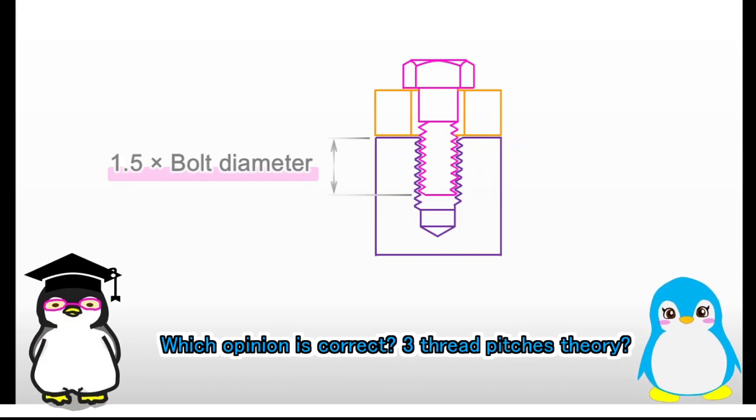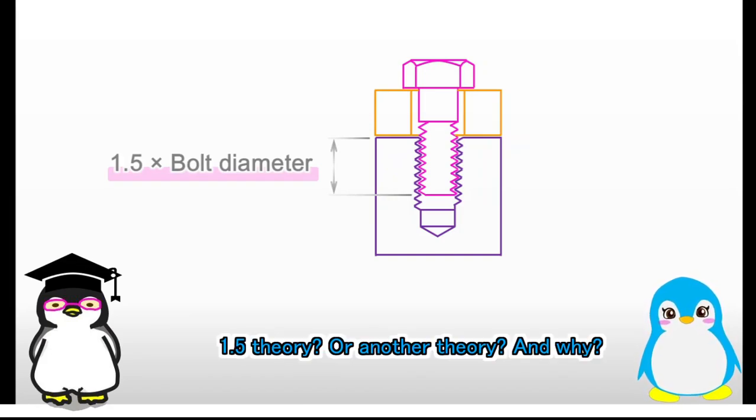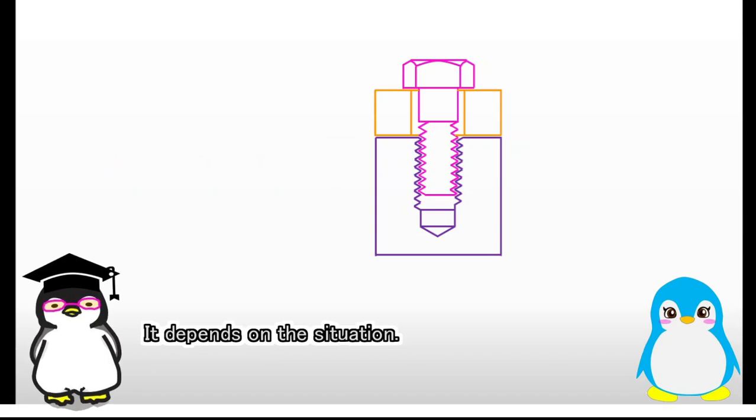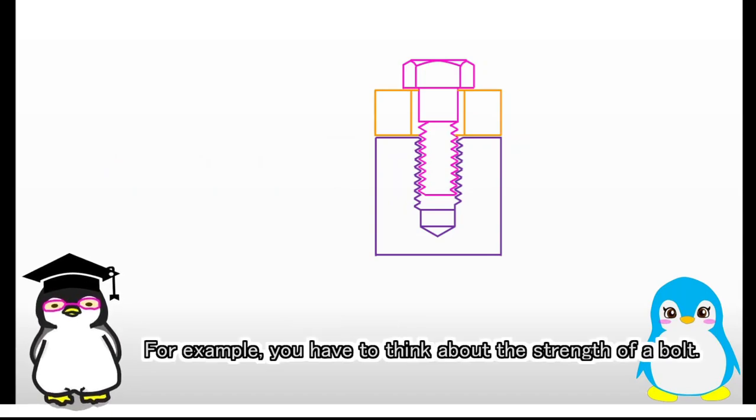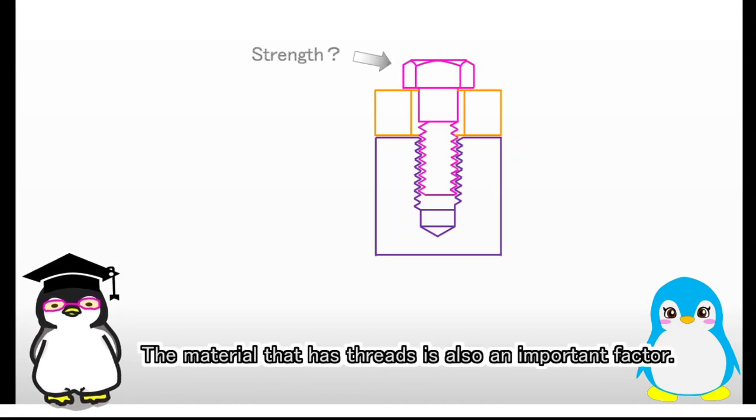Some say it's okay if a bolt goes three thread pitches, but others say bolt depth should be at least 1.5 times the bolt diameter. There may be other opinions. Which opinion is correct? Three thread pitches theory, 1.5 theory, or another theory? And why? It depends on the situation. For example, you have to think about the strength of the bolt. The material that has threads is also an important factor.